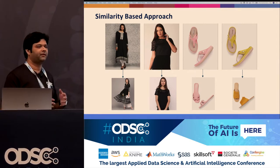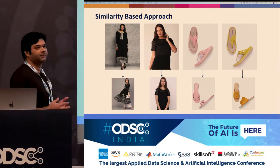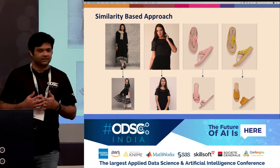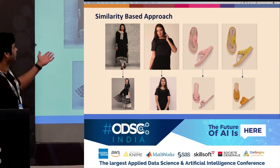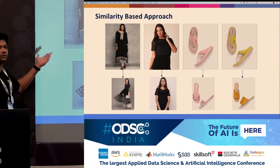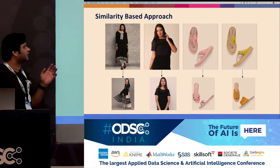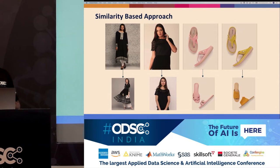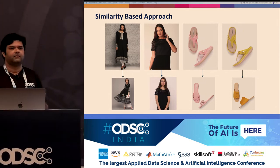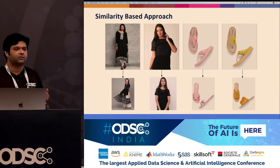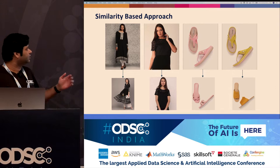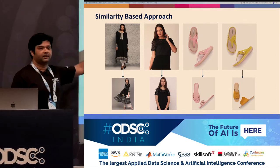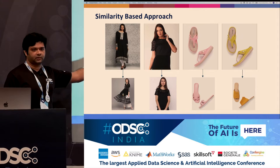Let's say I wanted to build a very simple recommendation system. Imagine a user who started looking at a women's kurta, then looked at a top, and then went to flats. A very typical approach to keep it simple would be to just look at the most similar product from every item that the user has browsed, and then show it.